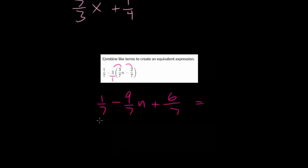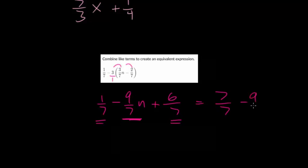At this point we just need to combine like terms. There's only one term with n, so we keep minus nine over seven n. Then we combine the constant terms: one-seventh plus six-sevenths. The denominator is already the same, so we add across to get seven over seven, which is just one. So the result is one minus nine over seven n.